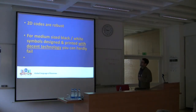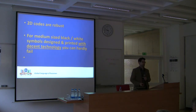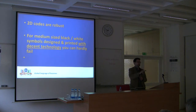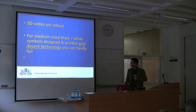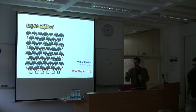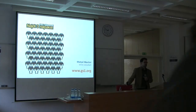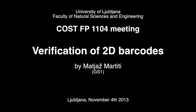This will be my last slide. To sum it up: 2D barcodes are robust for medium-sized black and white symbols — designed and printed with this technology, you can hardly fail. If you are in a specific application — airplane part marking or marking medicine — then it will probably be important to know where your symbol stands regarding verification results. But for all other uses, I think that is not needed. I will be here today until lunch and will be more than happy to answer any questions. Thank you.